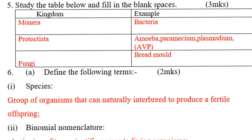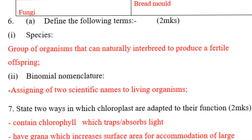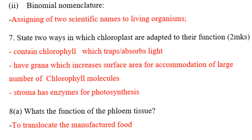Question number six: Define the following terms. Species is a group of organisms that can naturally interbreed to produce a fertile offspring. Binomial nomenclature is the assigning of two scientific names to a living organism.